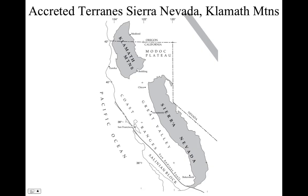In the next video, I'll relate the Klamath Mountains and the Sierra Nevada provinces again, because they both share similar histories — they have the same exotic terrains that have been docking and attaching to western North America. Both areas have also been intruded by Mesozoic plutons of the same age, so they're both related in terms of tectonic style and setting.